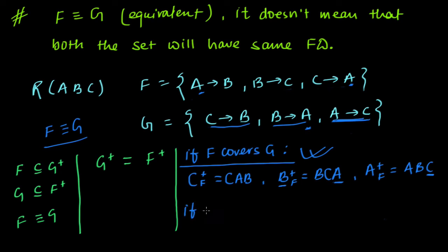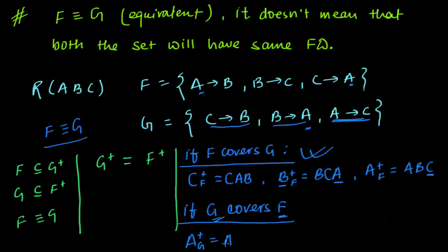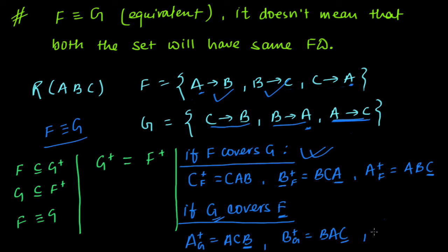Now we will check if g covers f. To check this, we derive all the functional dependencies of f from the functional dependencies of g. We find a plus in g: a can determine c, and c can determine b. As it has b, this holds. Similarly, we find b plus in g: b determines a, a can determine c. As it has c, this functional dependency can be derived from g.